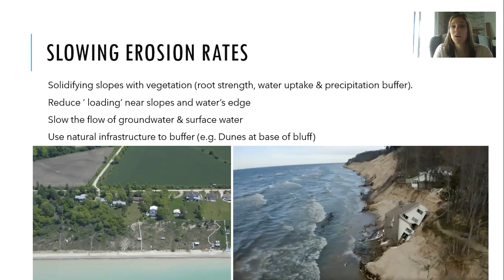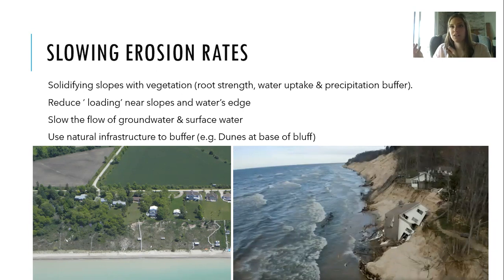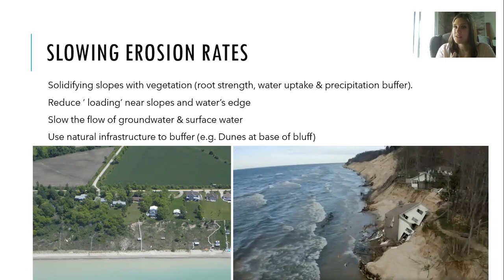Flowing the flow of groundwater and surface water across the landscape is important. As I mentioned, having wetlands and woodlands that can hold back water farther inland reduces the amount that's all coming out during a storm surge. Using natural infrastructure to buffer — having dunes at the base of the bluff that can take a lot of the energy of a storm during low to medium lake levels — will all help protect the shoreline.